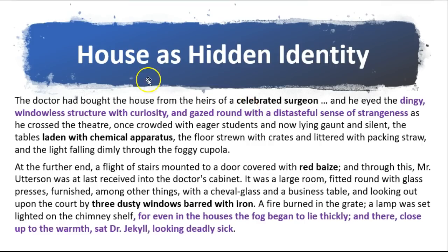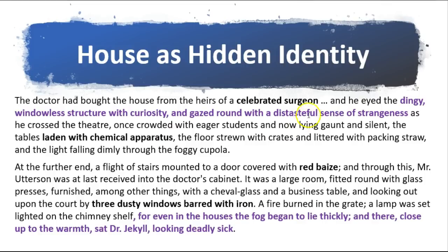We can delve deeper into how the house is a symbol of hidden identity. Going back to Jekyll's house: 'The doctor had bought the house from the heirs of a celebrated surgeon' — who we've just met — 'and he eyed the dingy windowless structure with curiosity and gazed round with a distasteful sense of strangeness as he crossed the theatre, once crowded with eager students and now lying gaunt and silent, the tables laden with chemical apparatus, the floor strewn with crates and littered with packing straw, and the light falling dimly through the foggy cupola.' Stevenson is explicit: this celebrated surgeon's achievements were based on chemical apparatus — the idea of drugs — but linked to crime, which is why Utterson finds it distasteful.